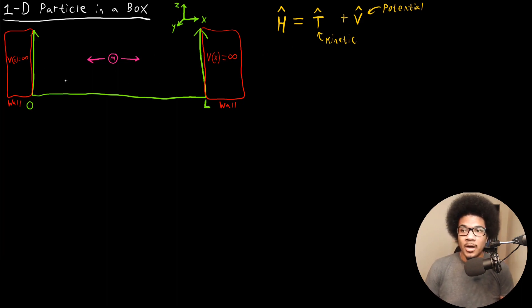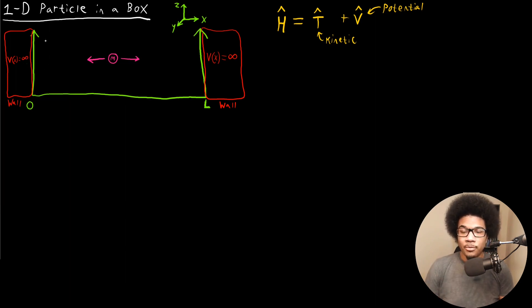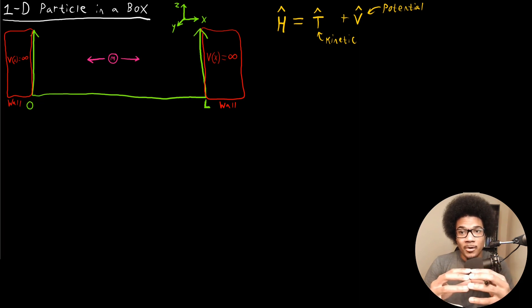With the one-dimensional particle in the box, we have a particle of mass M that's in a box and it's only moving in one direction. The axis is defined in the X direction, and you have a box of some length L. The box has a total length from zero to L, and at the edges of this box, the potential acting on the particle is actually infinite. This means the potential wall is an impenetrable wall — the particle cannot go through or over it — effectively confining the particle to only move within this defined space.